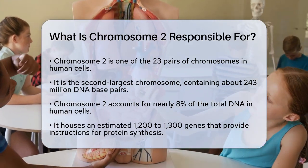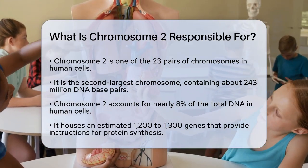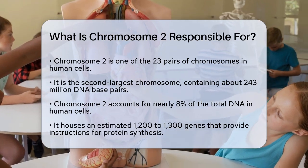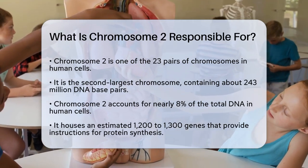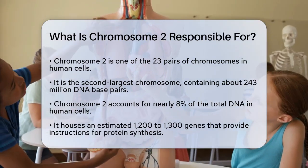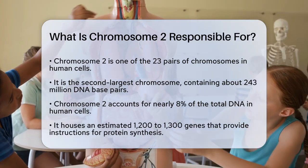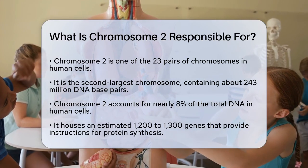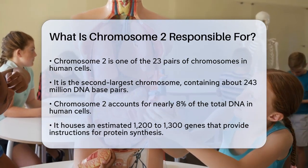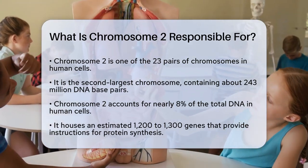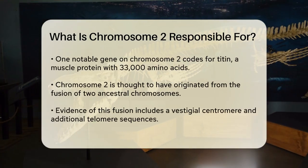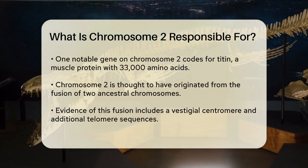This chromosome is home to a significant number of genes, estimated to be between 1,200 to 1,300. These genes provide instructions for making proteins that perform a wide range of functions in the body. For instance, one of the genes on chromosome 2 codes for a muscle protein called titin, which is incredibly long with 33,000 amino acids.